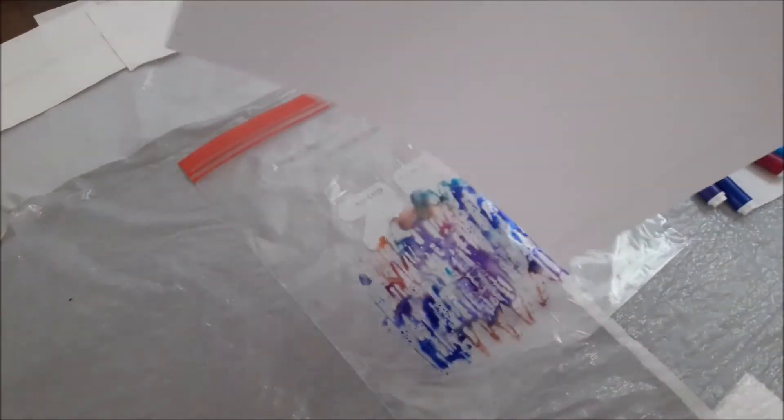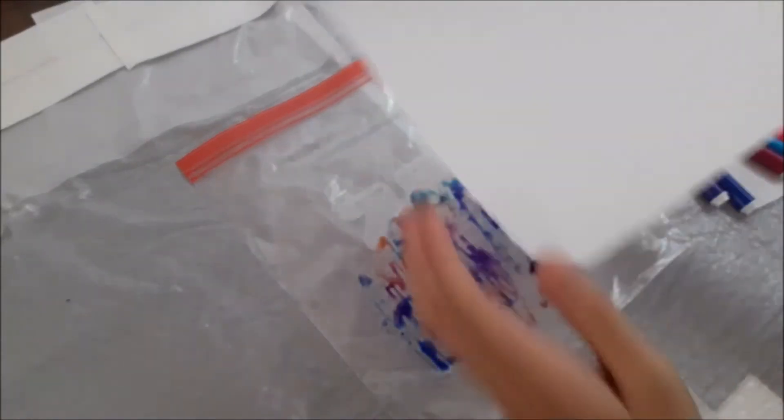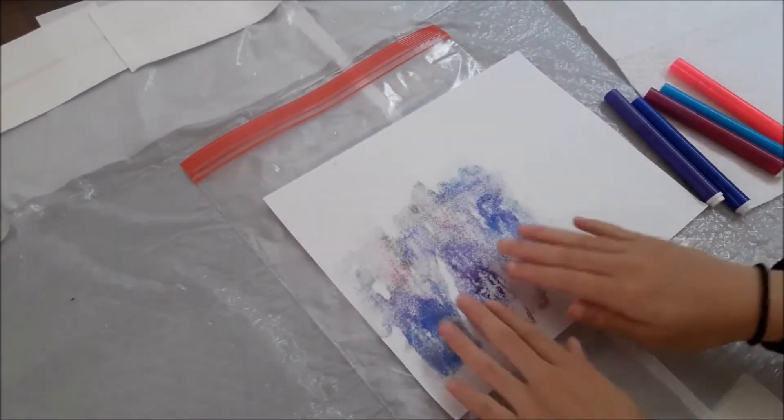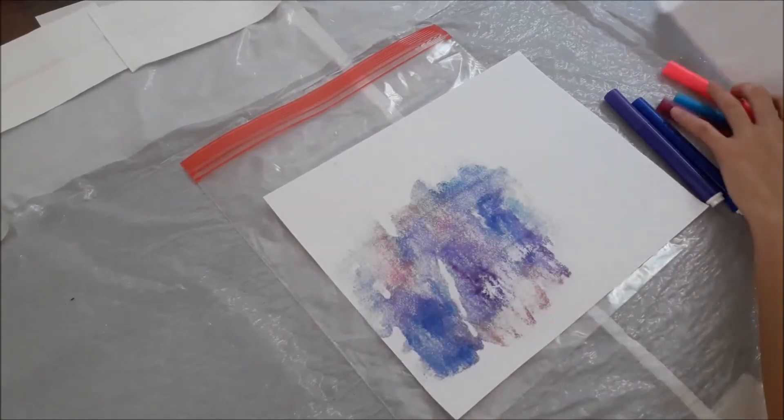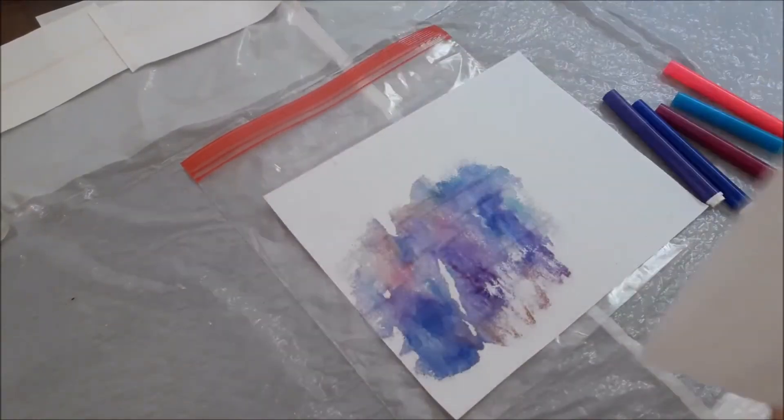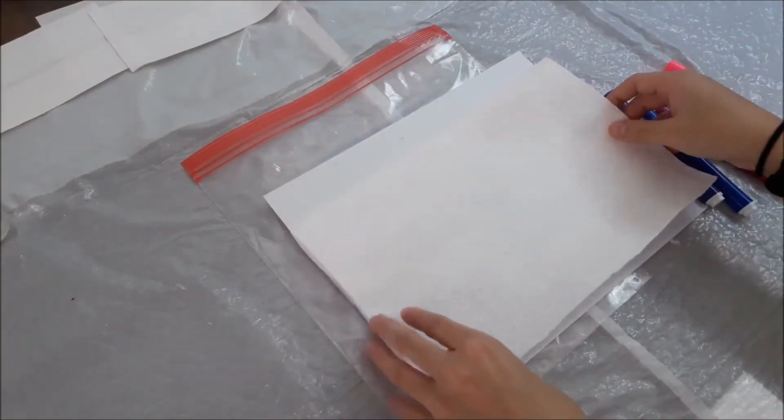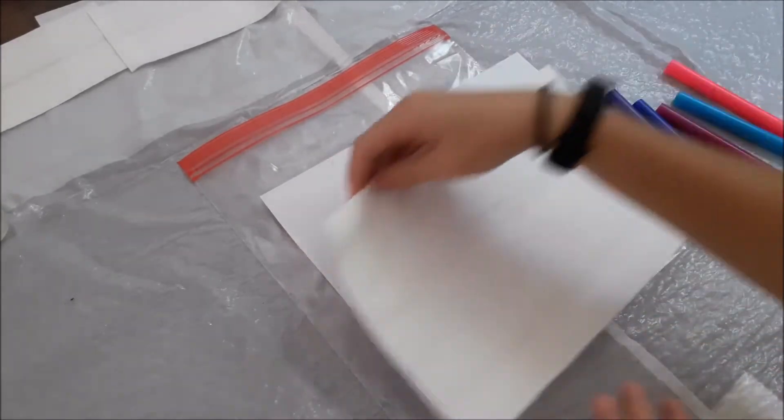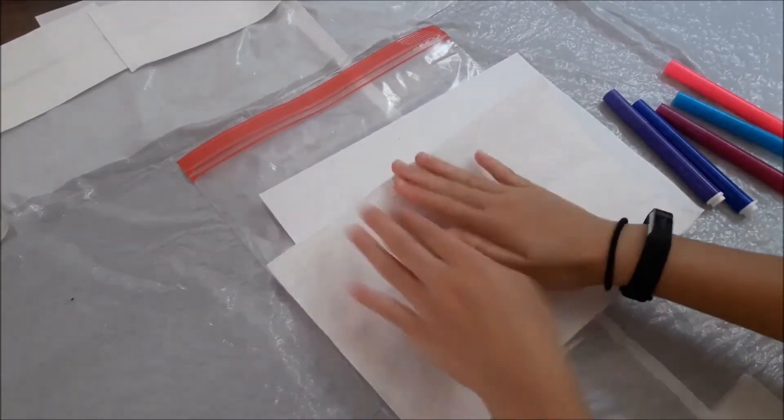Next you are going to take your piece of paper and just lay it on top. Once you lay it on top, you want to take your paper towel and lay it on top of your piece of paper. And you can slightly press down on it so that the marker gets onto the piece of paper.